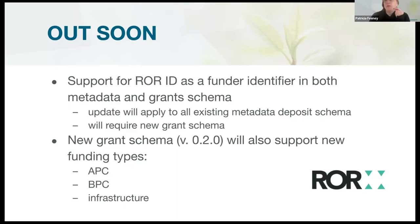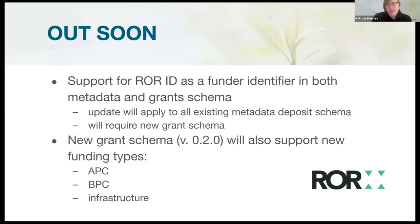For grants, we'll be moving to a new version of the grant schema, and with that new iteration we'll also be accepting three new funding types: APC, BPC, and infrastructure. The article processing charge in particular has been requested a lot, as many want to be able to track the funding of APCs separately from overall funding. We hope that will be picked up by our funder members.